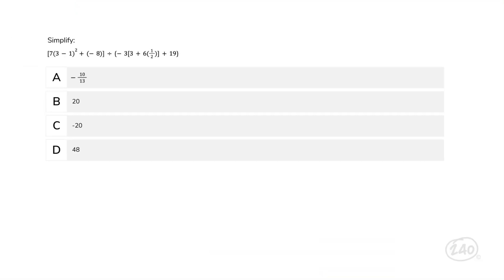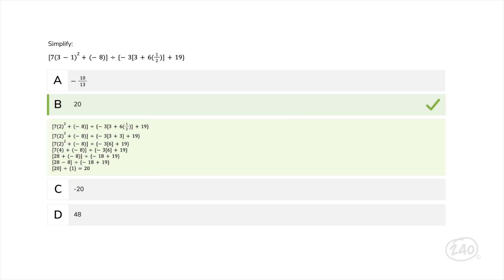Let's have you try your hand at one. Simplify the expression shown — remember to use PEMDAS. Because there are multiple sets of parentheses and brackets, you'll also have to follow the correct order of operations within the parentheses and brackets. It takes quite a few steps, but you'll find the correct answer is B: 20.